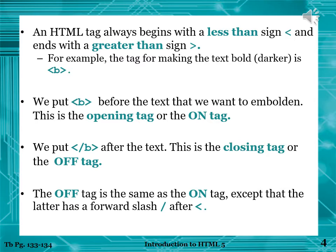An HTML Tag always begins with a less than sign and ends with a greater than sign, and these signs are called angle brackets. For example, the tag for making text bold is less than B and greater than sign.